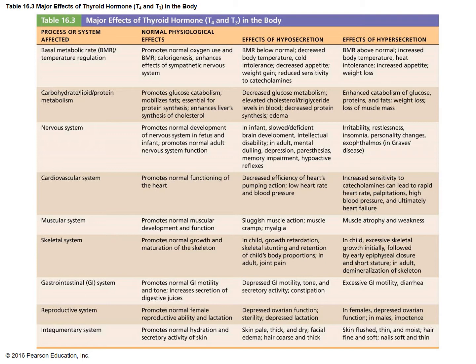This table shows the major effects of thyroid hormone on various body systems — what the normal effect is, what happens with hyposecretion, which is not enough, and what happens with hypersecretion, which is too much.